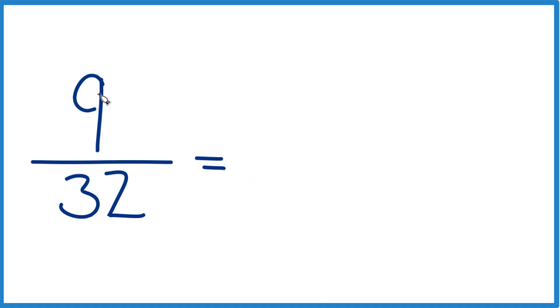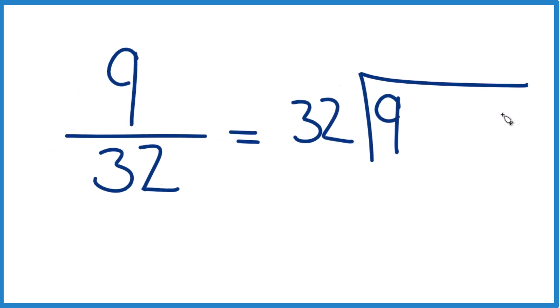So we have 9. We want to know how many times 32 goes into 9. So here's 9, and we have 32 like this. So 32 doesn't go into 9, but we could call this 90 here if we put a 0 and a decimal point up here.